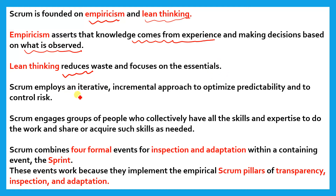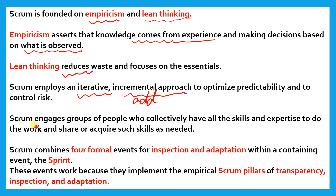Scrum employs an iterative approach — iterative means the four points we discussed in the last lesson repeat again and again. We get some feedback and try to make the second sprint better compared to the previous one. It is an iterative, incremental approach, where each sprint adds value to optimize predictability and control risk. Scrum engages groups of people who collectively have all the skills and expertise to do the work and share or acquire such skills as needed.